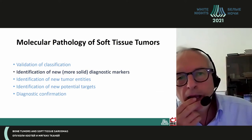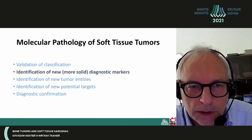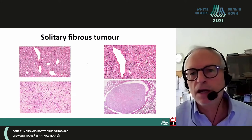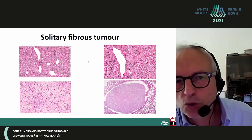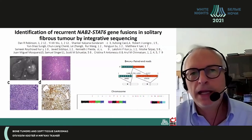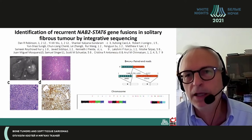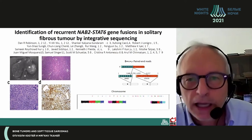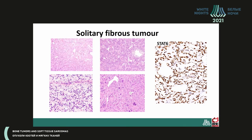Moreover, identification of new, more solid diagnostic markers, such as in solitary fibrous tumor, in which, thanks to molecular biology, the NAB2-STAT6 gene fusion has been discovered and an antibody — STAT6 — has been developed, which is also very useful, though not very sensitive, for this kind of tumor.